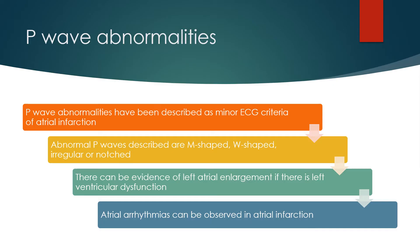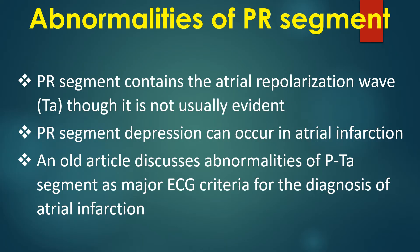P wave abnormalities have been described as minor ECG criteria of atrial infarction. Abnormal P waves described are M-shaped, W-shaped, irregular or notched. There can be evidence of left atrial enlargement if there is left ventricular dysfunction. Atrial arrhythmias can be observed in atrial infarction. The PR segment contains the atrial repolarization wave or TA wave, though it is not usually evident. PR segment depression can occur in atrial infarction.